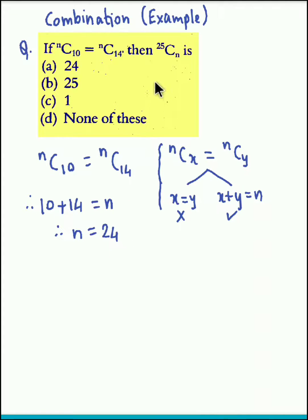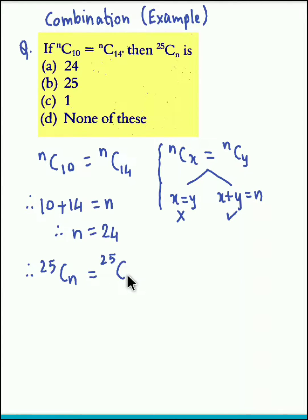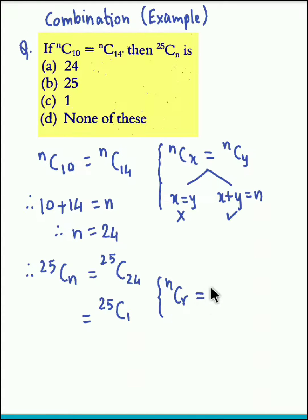We need to obtain the value of 25CN. Therefore, 25CN equals 25C24. Now we apply the property NCR is equal to NC(N minus R), so 25C24 becomes 25C(25 minus 24), that is 25C1.